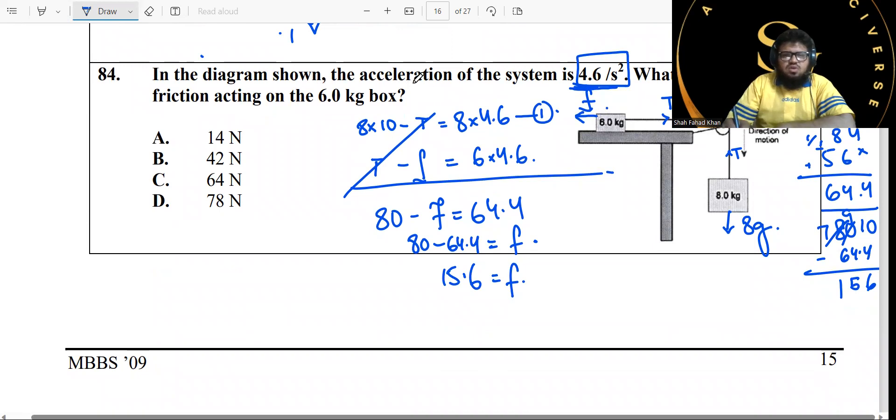In the diagram shown, the acceleration of the system is 4.6 meters per second squared. What is the force of friction acting on the 6 kg box? This is a conceptual question, very similar to an A level question. You have a 6 kg box right here and an 8 kg box right here, both connected by a string. The string has a certain value of tension in it. Tension is always away from the objects. If you look at the net force acting on this downward 8 kg object, because the object is moving downward, the downward force has to be greater than the upward force.